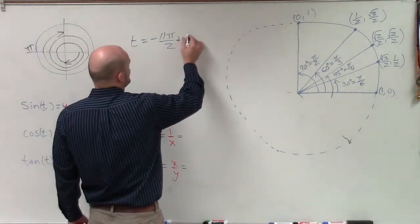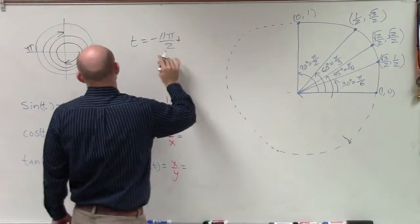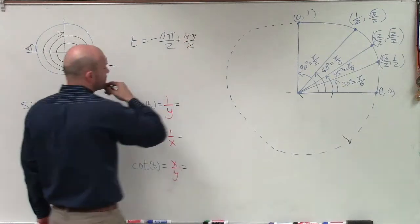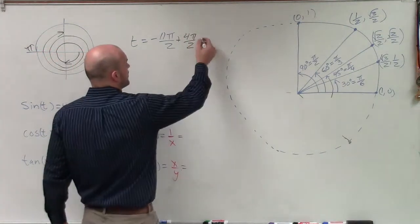So what we can do is keep adding 2 pi. Since we have a denominator of 2, I'm going to add 4 pi over 2, because 4 pi over 2 is the same thing as 2 pi. If I add 4 pi once, I'll still have a negative angle.